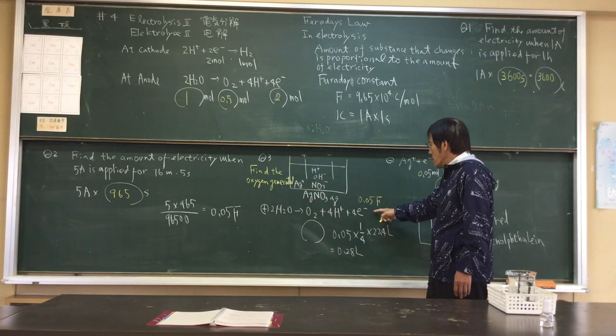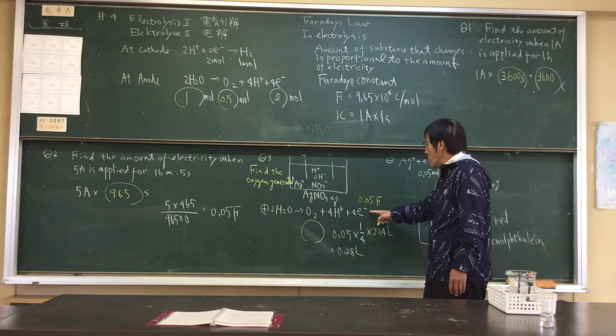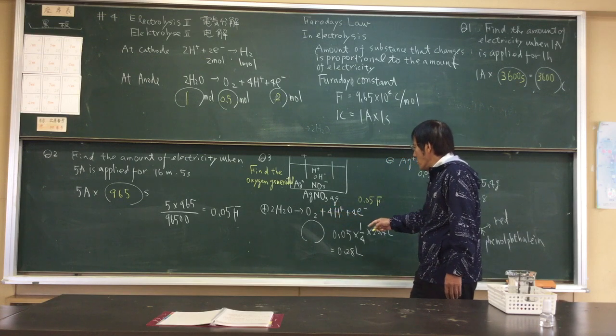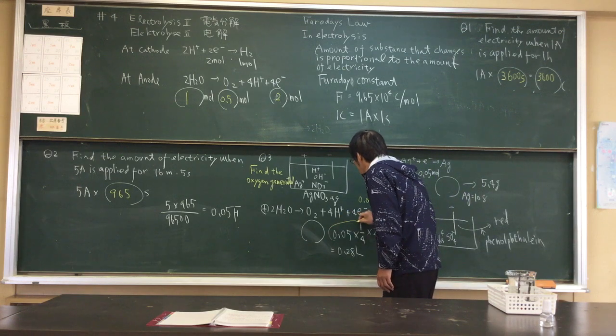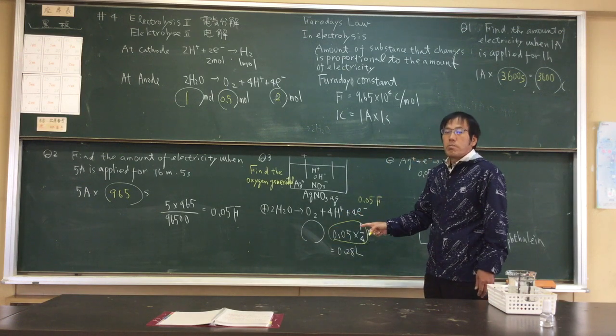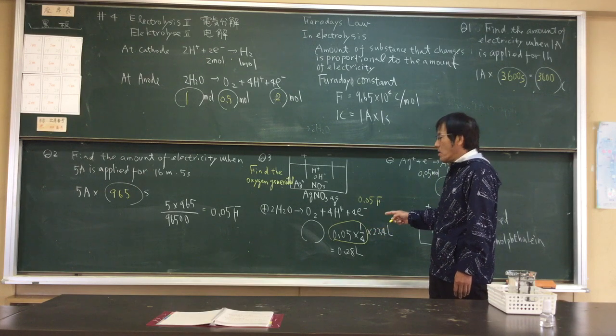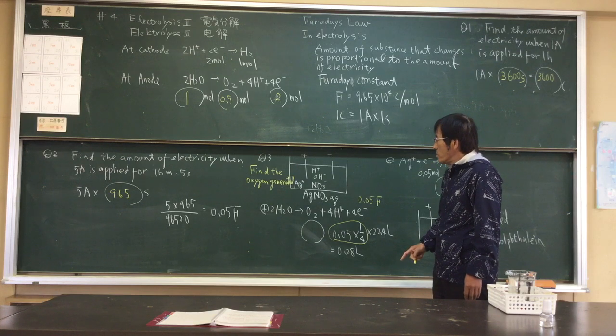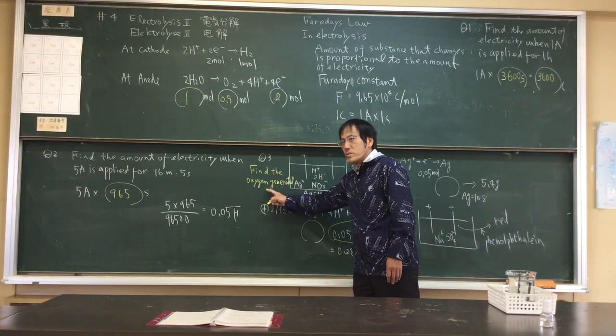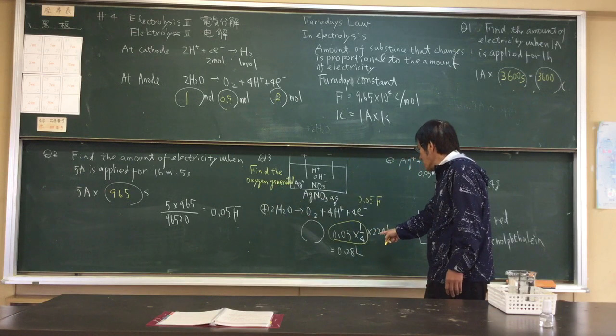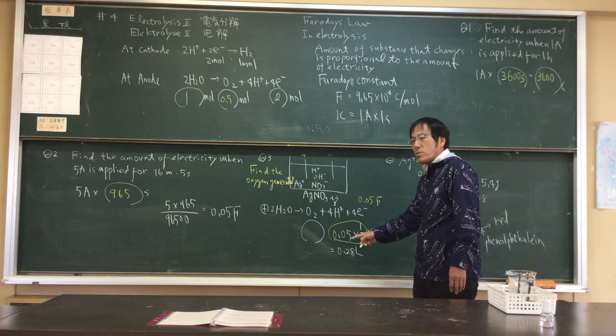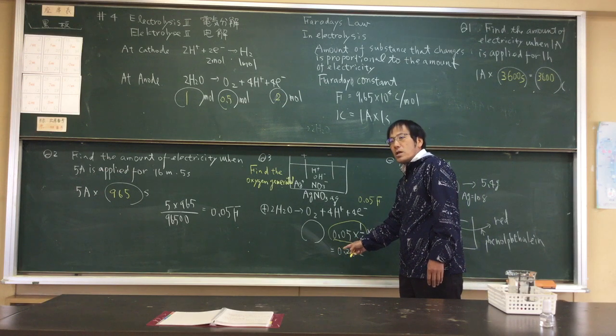Oxygen generated. For molar electron loads, oxygen is generated. 0.05 times 1.5. Find the oxygen volume. Time 22.4 L. Equal 0.28 L.